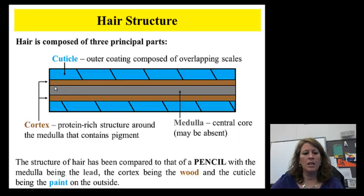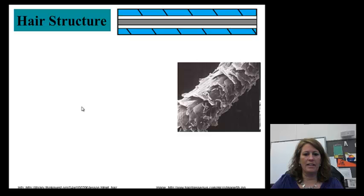The medulla runs down the middle. This is what you look at to determine if it's a human hair or does it come from an animal. Animals have very distinct medulla. I love this comparison when they were talking about looking at a pencil: the lead would be down the middle, the cortex is the hair color like the wood color of the pencil, and then whatever color your pencil is on the outside is like the paint. I like that example.